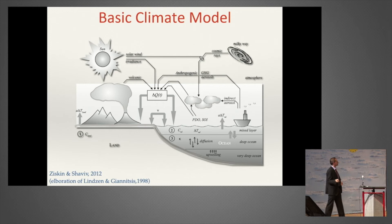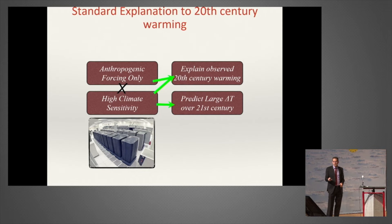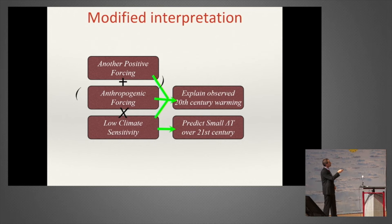You can also try to simulate the 20th century—when you allow the sun to have a large effect on climate, you find you can explain the behavior of the 20th century much better than without it. From the last IPCC report, you can see large residuals—for example at Pinatubo, the models give that temperature should have decreased much more than in reality, because the climate models are more sensitive. The standard picture assumes only anthropogenic forcings and therefore needs a high climate sensitivity to explain 20th century warming.